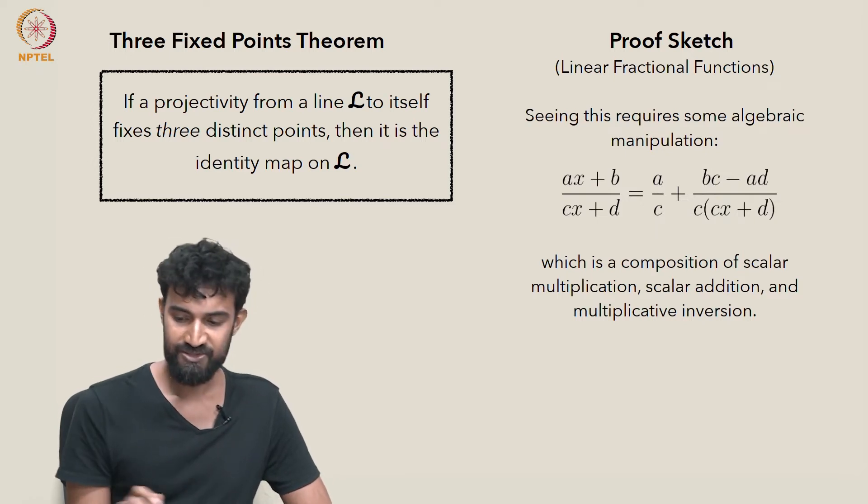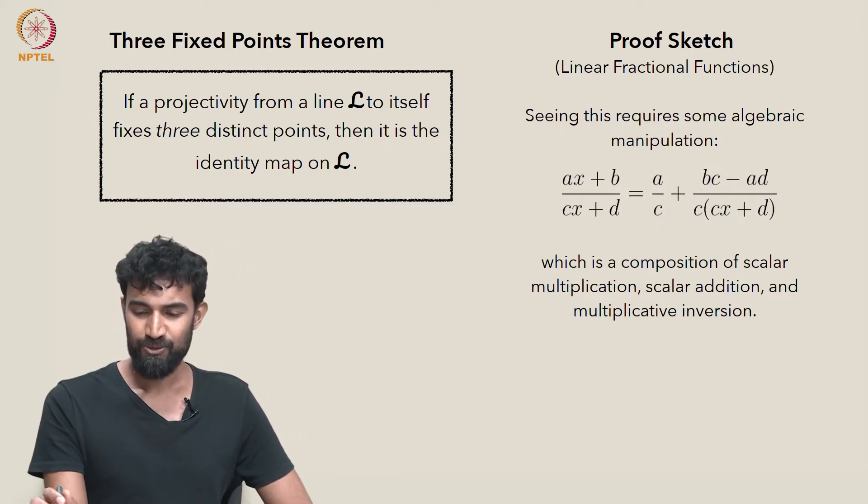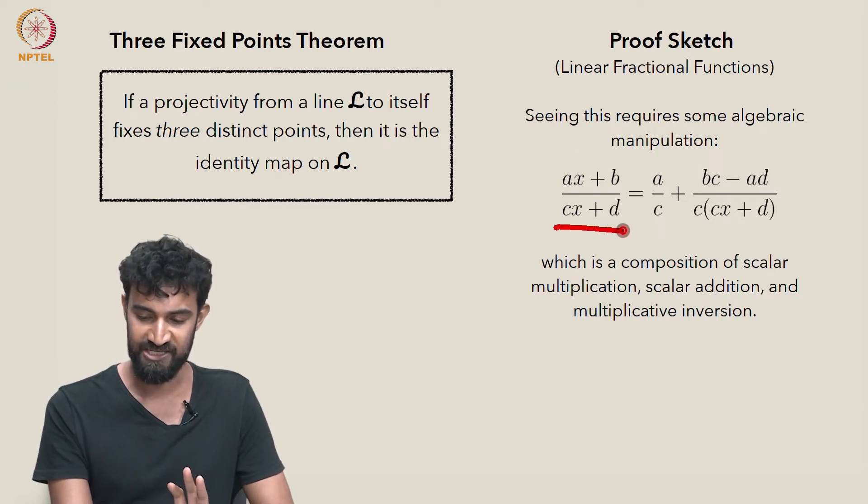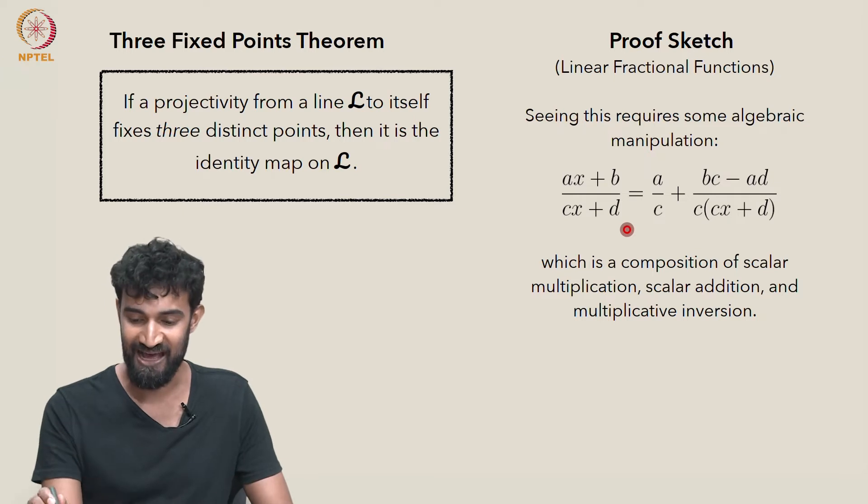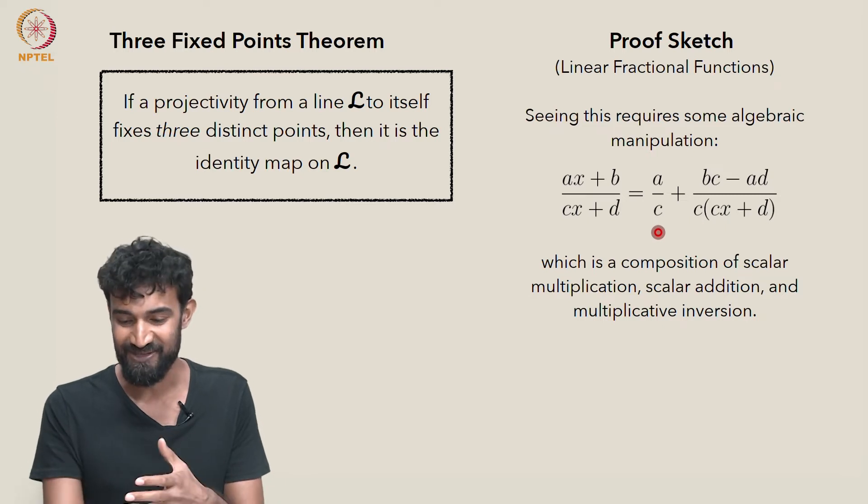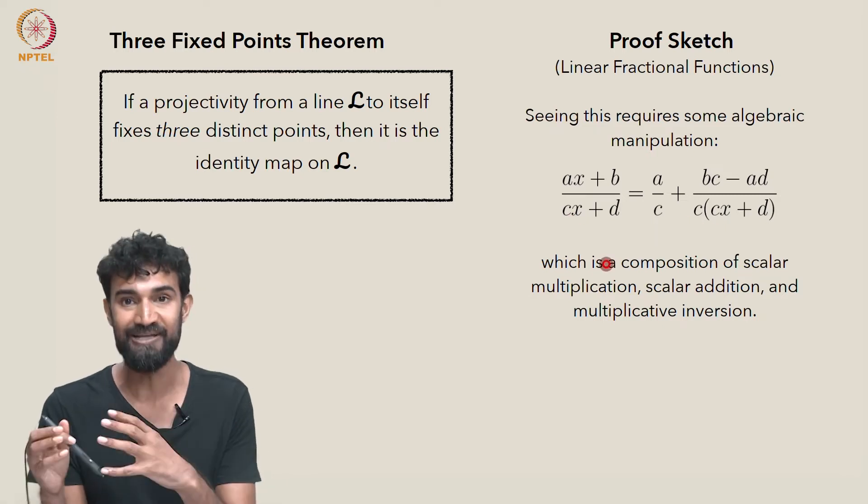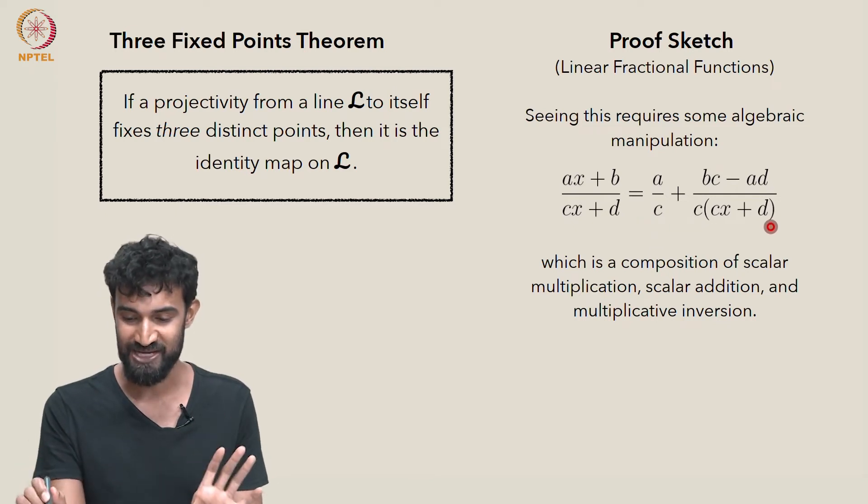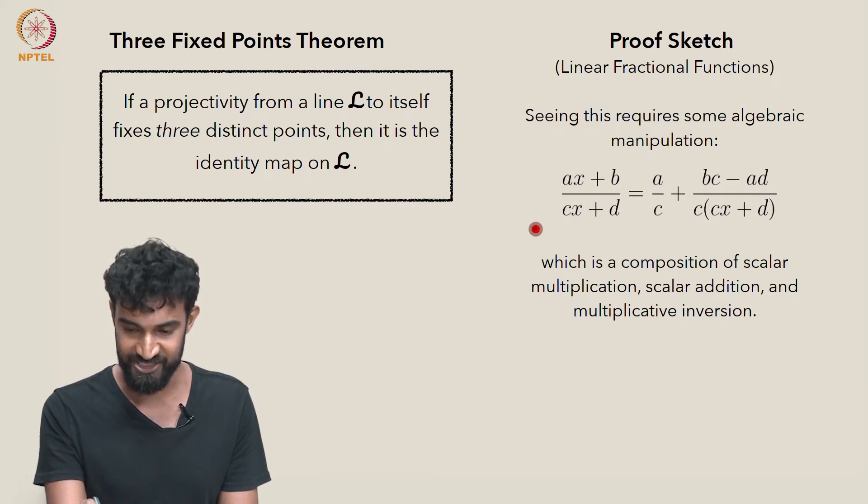Okay. So now let's sketch the proof. Doing some algebraic manipulation, you can work out that (ax + b)/(cx + d) can be rewritten as a/c + (bc - ad)/(c(cx + d)). You can just take the right hand side and manipulate it a bit to get to the left hand side. It's not that hard to do, but I'll leave that as another exercise for you to check.